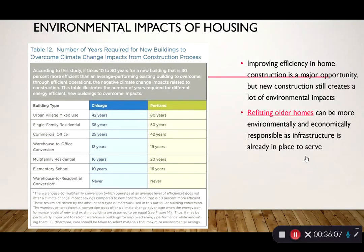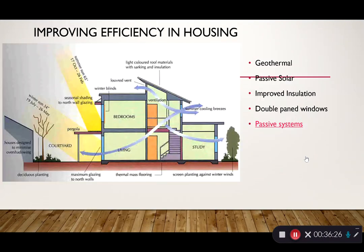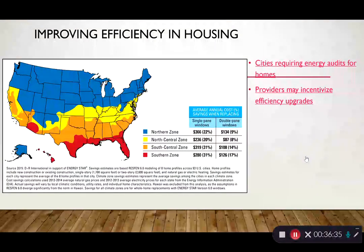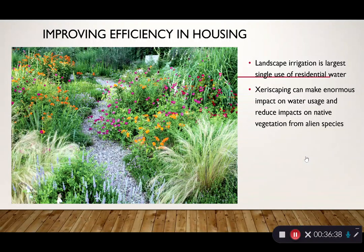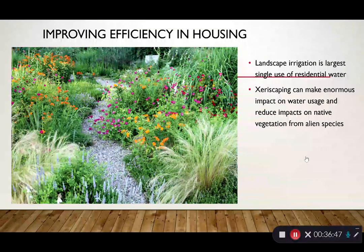Improving efficiency in home construction is a major opportunity to reduce environmental impacts. Retrofitting older homes can be more environmentally efficient than building new — investing in maintenance and improvements to existing homes has a smaller footprint than new construction. Passive design allows natural heating and cooling, reducing heat from sunlight. Landscaping is also a big part of efficiency — using xeriscaping and native plants reduces water demand and reduces pesticide, herbicide, and fertilizer use.